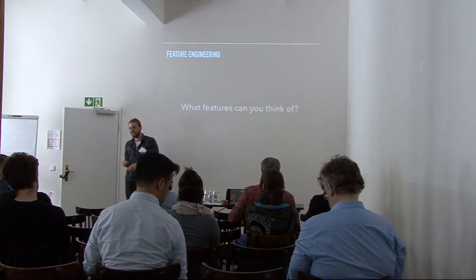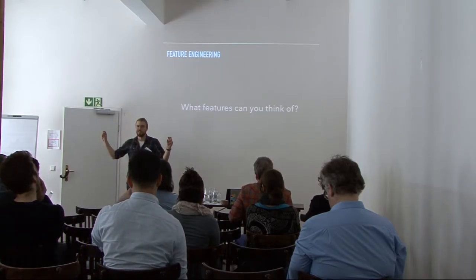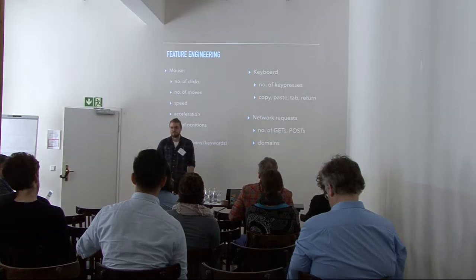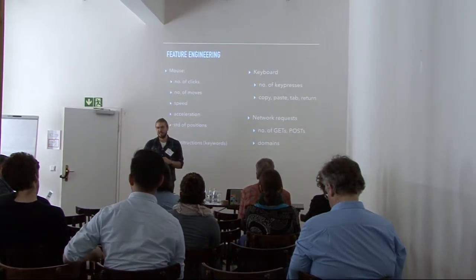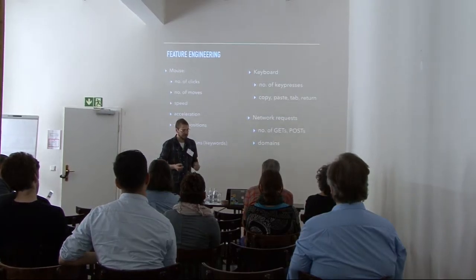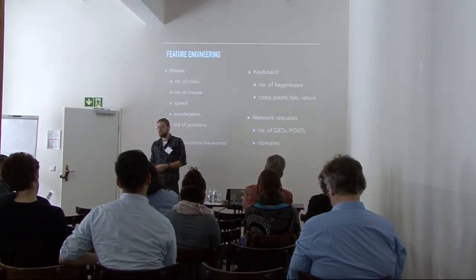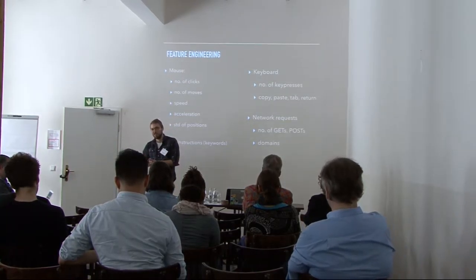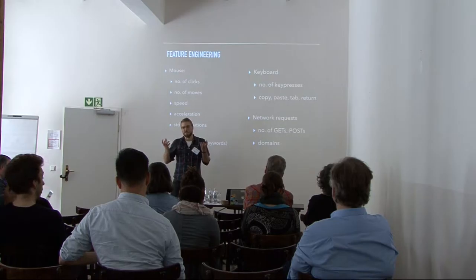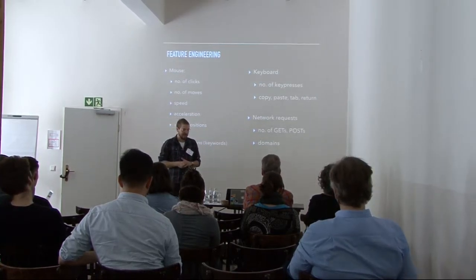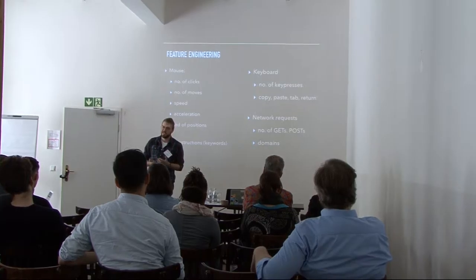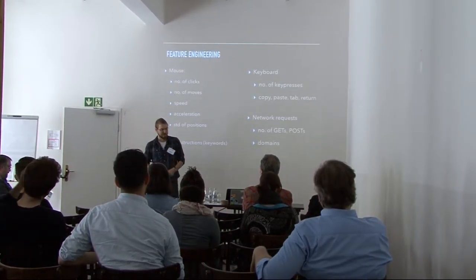We have all these mouse movements and what people clicked, and we need to turn it into a feature vector — a string of numbers. You can count the number of clicks, try to get the speed and acceleration of the mouse cursor, the number of keys pressed, or the presence of specific combinations like copy and paste. You can also look for keywords in the test instructions — if there's a keyword like 'click,' there should probably be at least one click detected. We use Python and the scikit-learn package, which makes it really easy to look at feature importance and iterate on your pipeline.